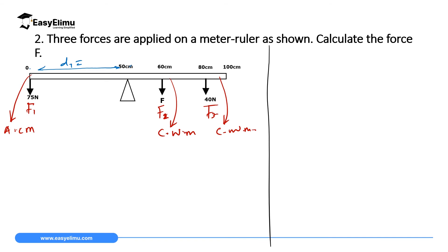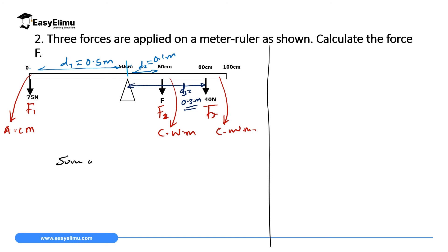Next, we determine distances from the pivot. d1 is 50 minus 0, which equals 0.5 meters. d2 is 60 minus 50, which equals 10 cm or 0.1 meters. d3 is 80 minus 50, which equals 30 cm or 0.3 meters. We can now write the equation using the principle of moments: the sum of clockwise moments equals the sum of anticlockwise moments.